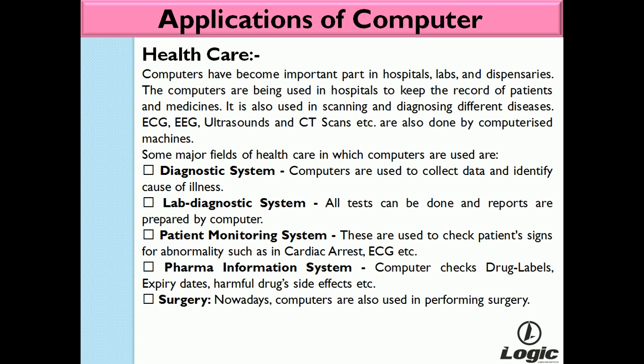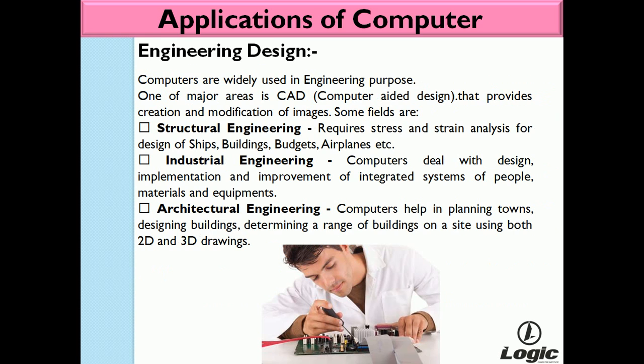In lab diagnostic systems, all tests can be done and reports are prepared by computer. Patient monitoring systems are used to check patient signs or abnormalities such as in cardiac arrest and ECG. Pharmacy information systems allow computers to check drug labels, expiry dates, harmful drug side effects, etc. Computers are also now used in performing surgery.